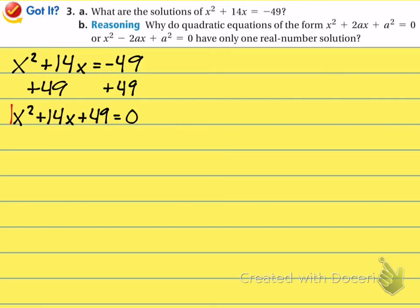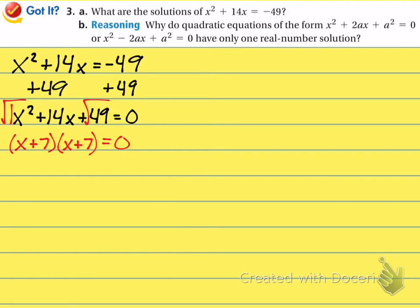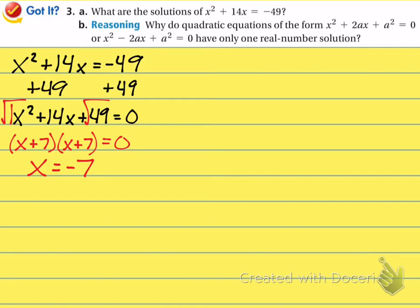Notice that because there's a 1 in front of the x-squared, and both 1 and 49 are perfect squares, you can take their square roots — this is a special case covered in section 8-7. The square root of 49 is 7, and because 14 is positive we write positive 7. So the factored form is x plus 7 times x plus 7. The only thing that makes x plus 7 equal zero is x equals negative 7. Since you have the same binomial twice, there is just one solution: x equals negative 7.